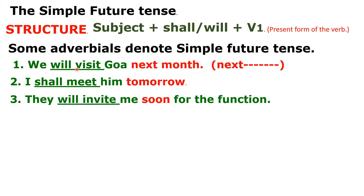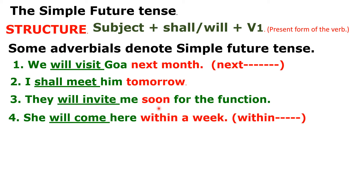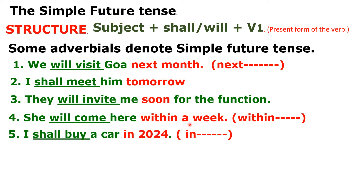These are simple future adverbials. Fourth: 'within' — for example, 'She will come here within a week,' within a month, within a year. Fifth: 'in' — for example, 'I shall buy a car in 2024.' The keyword here is 'in' followed by a year.